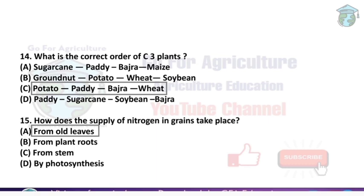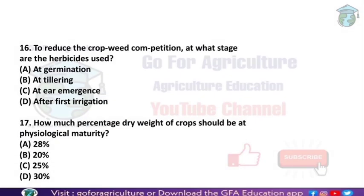How does the supply of nitrogen to grains take place? Through the older leaves only. Next: to reduce crop-weed competition, at what stage should herbicides be used? The answer is after the first irrigation — to avoid competition between crop and weeds. Next: how much dry weight percentage of crops should be at physiological maturity? The answer is 25 percent dry weight at physiological maturity.